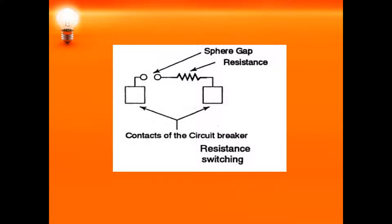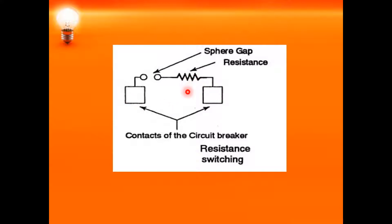To reduce this restriking voltage, we connect a resistance across the circuit breaker contacts — specifically, a resistance along with a sphere gap across the contacts. The way in which this resistance is connected, so that the arc current follows the path of this resistance, is called resistance switching.